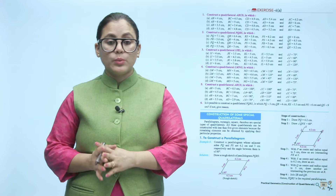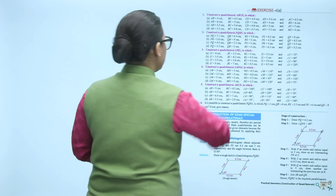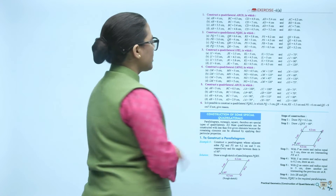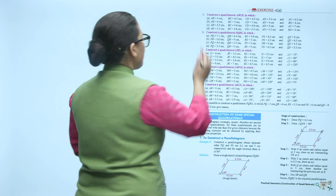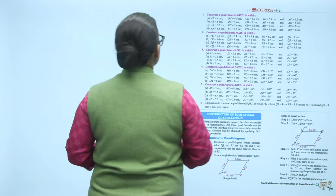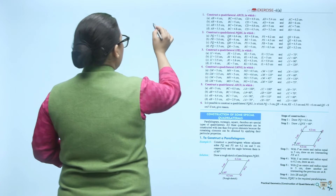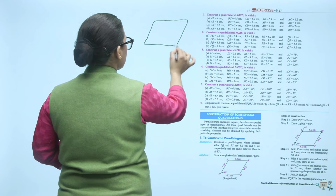Let's see the exercise. Construct quadrilateral ABCD. You have to make a construction using the five combinations. Before you construct any quadrilateral, you should always make a rough sketch first.